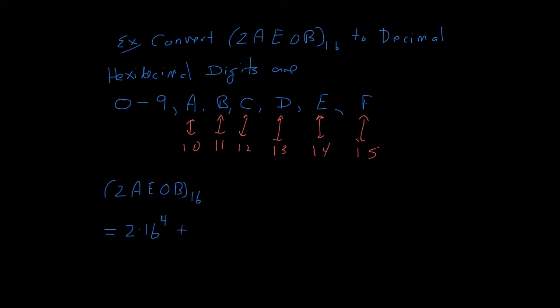Plus A, remember A is 10. So this is going to be 10 times 16 to the third power, plus E, but E is 14 times 16 squared, plus 0 times 16 to the first, plus B. B is an 11 times 16 to the zero power.